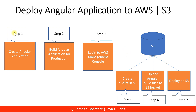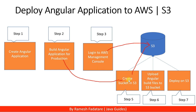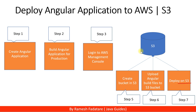Then we simply deploy these Angular build files on the S3 server — it's pretty simple and straightforward. Let's go ahead and create the Angular application, then build it for production, then log into the AWS Management Console, go to the S3 service, create a bucket, upload the production build files, and deploy.